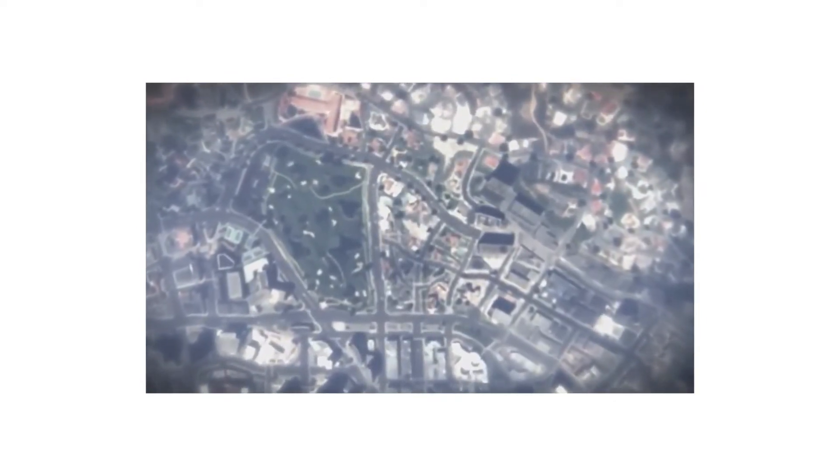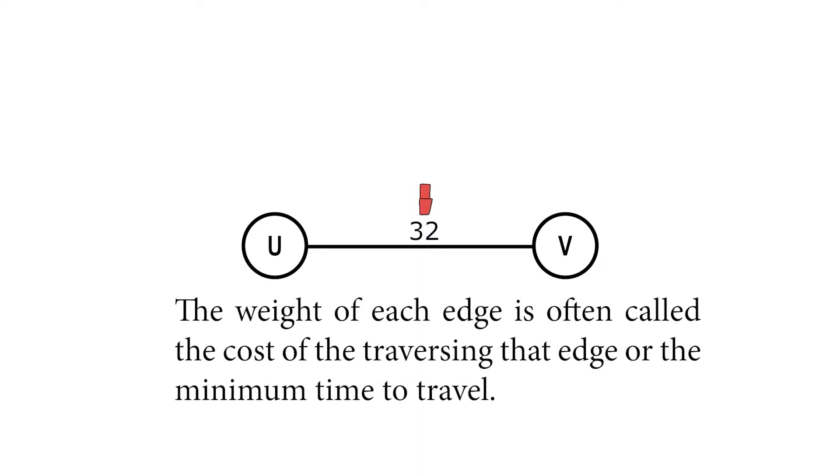In calculating the shortest path, we need data. These data will be from the weighted graph. Weighted graphs are graphs which edges are labeled by numbers. The weight of each edge is often called the cost of the traversing that edge or the minimum time to travel.